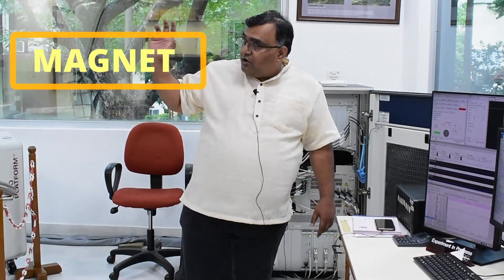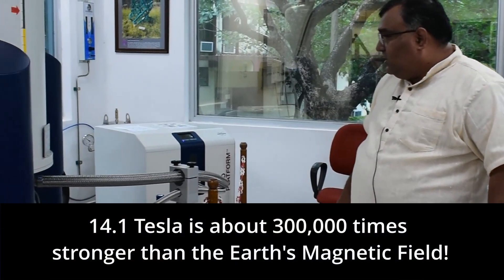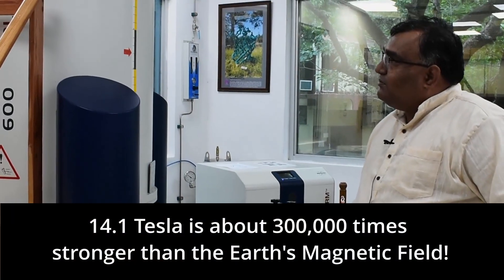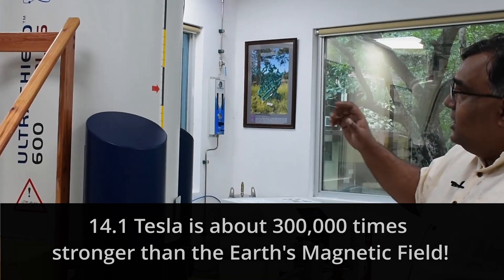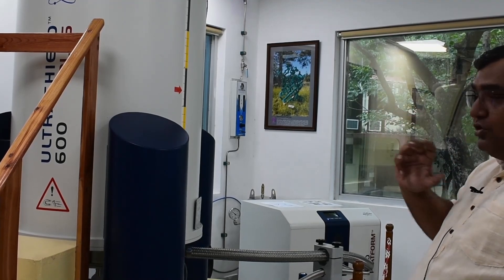The first and foremost component of any spectrometer is a magnet and here you see a magnet which is a 14.1 Tesla magnet and this 14.1 Tesla magnet is essentially created using superconducting technology.